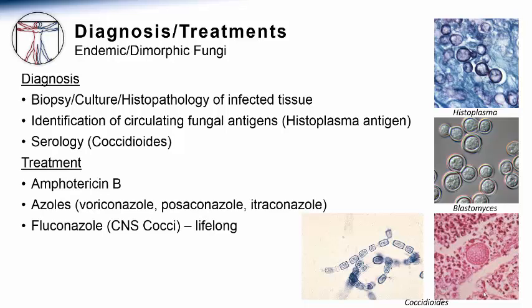Once the diagnosis is made, specific antifungal therapy is often required. Historically, Amphotericin B has been used for these infections and it is still used for very serious forms of the infection. However, for many patients with endemic fungal infections, the expanded azoles are the primary agents, such as voriconazole or posaconazole, and to a lesser extent itraconazole. The agent fluconazole can be used especially for Coccidioides infections — chronic infections in the lungs and also for central nervous system coccidioidomycosis because of its outstanding CSF penetration. Often, these patients with central nervous system Coccidioides infections will require lifelong therapy.